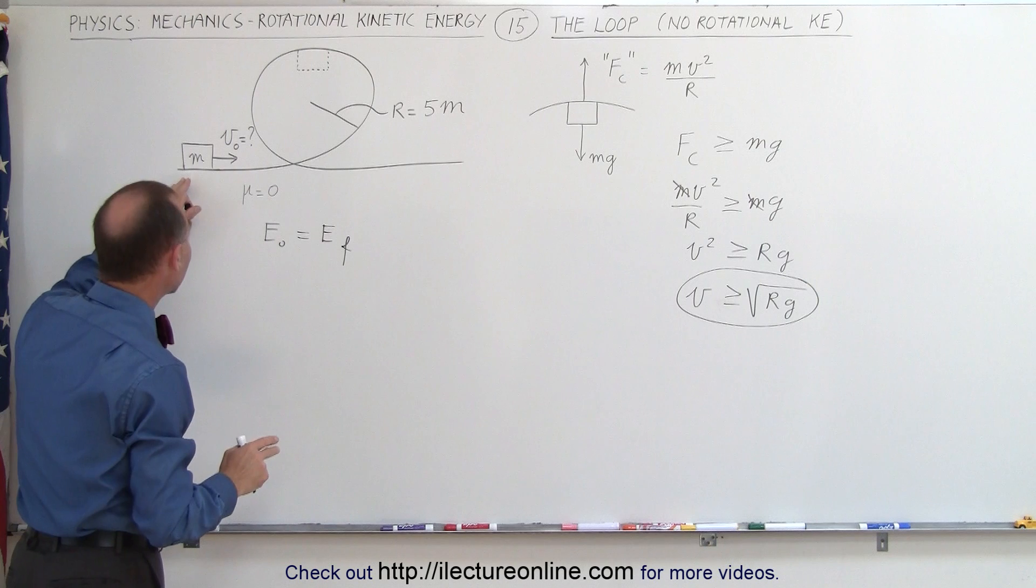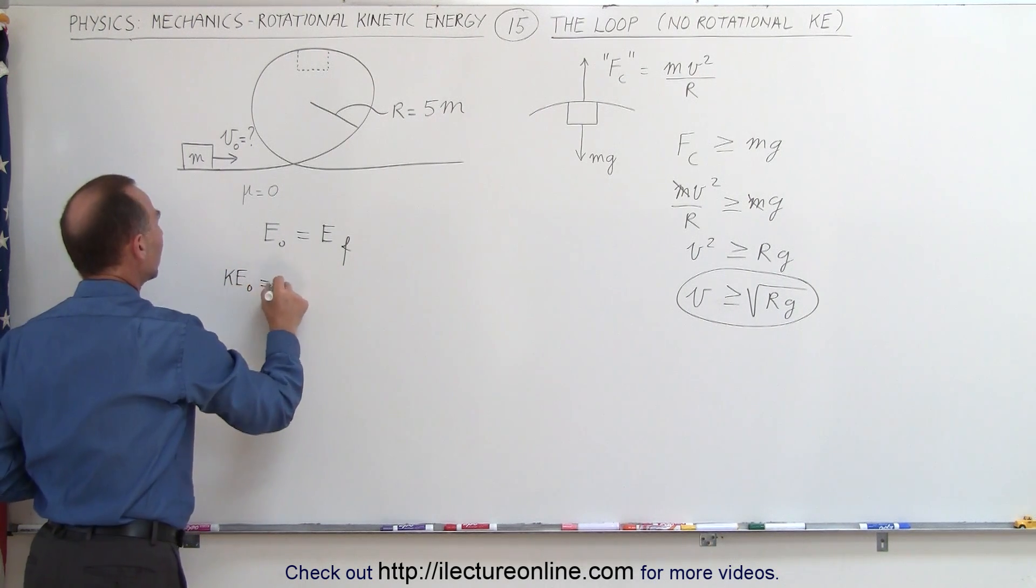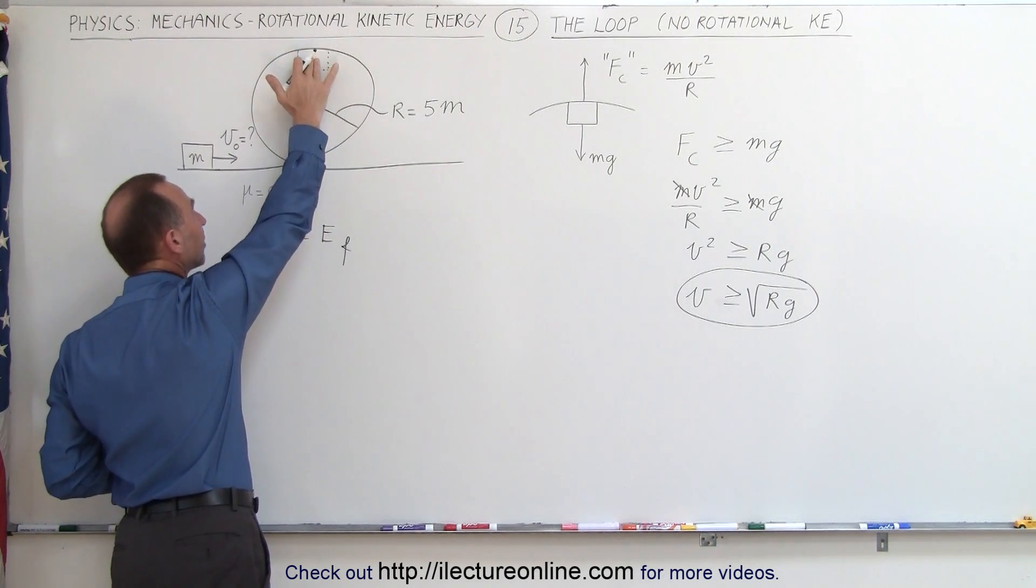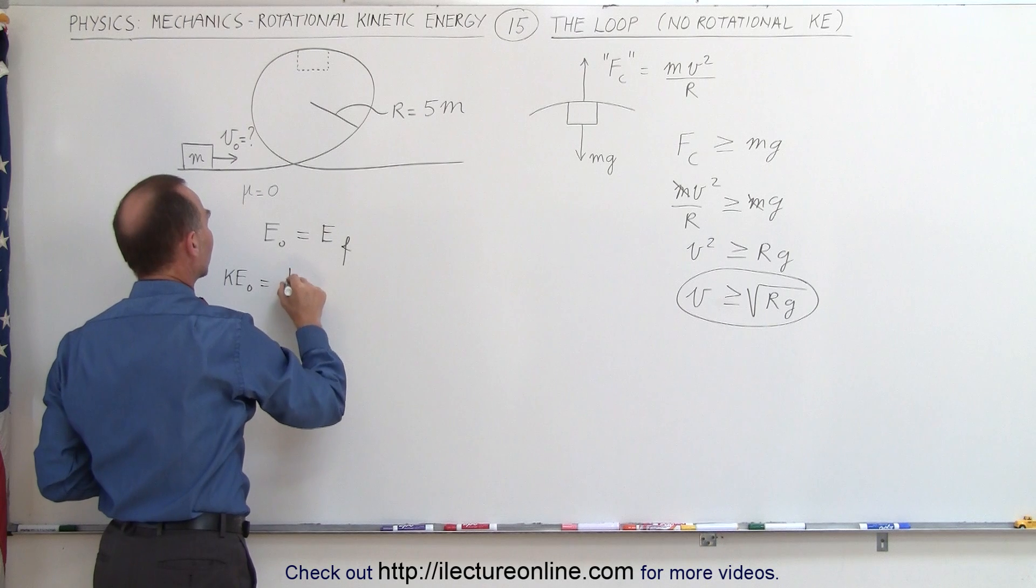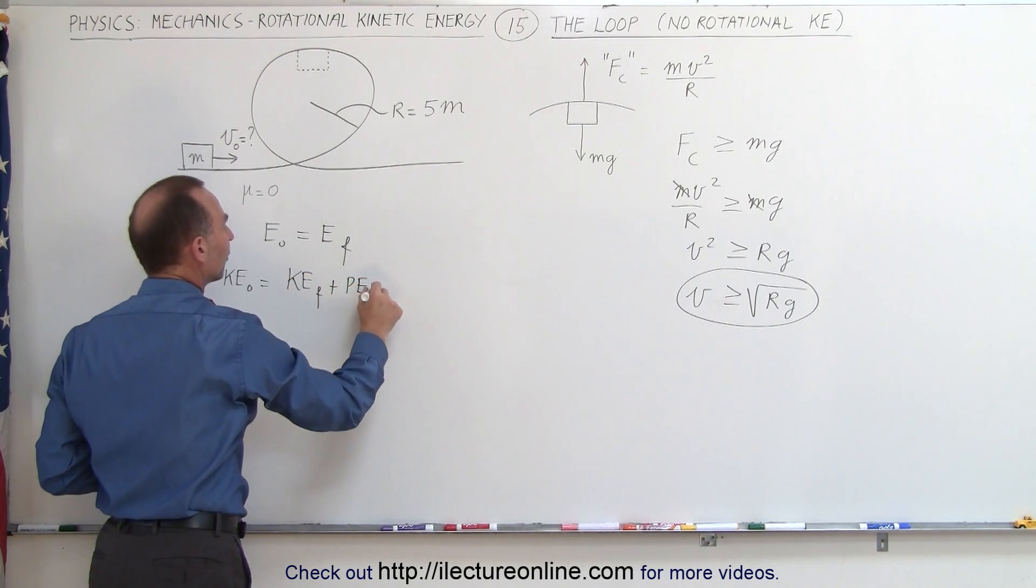Initially we have kinetic energy at the bottom, so we can say that the kinetic energy initial must equal the combination of potential energy when it's at the top and kinetic energy when it's at the top. So it has kinetic energy final plus potential energy final.